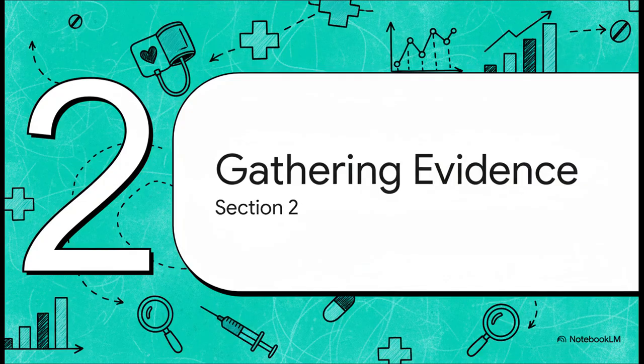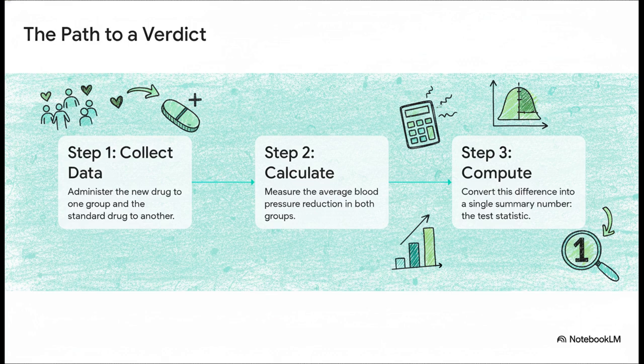All right, so our courtroom is set. We have our two opposing arguments on the table. So now what? Well, now it's time to play detective and actually gather the evidence. And in health research, that means running a study. And this is a really systematic process. First, you collect your data, give the new drug to one group, the standard one to another. Then you calculate the average results for both and see what the difference is. And finally, and this is so important, you take all that data and you boil it down to one single powerful number. We call that the test statistic.